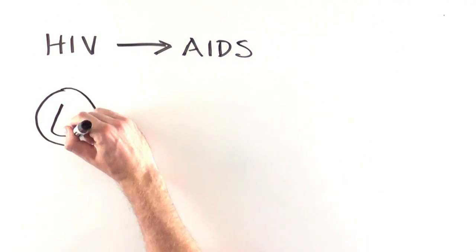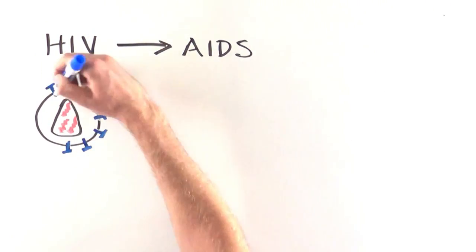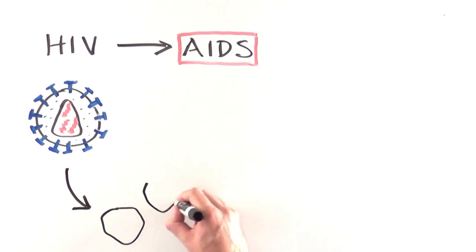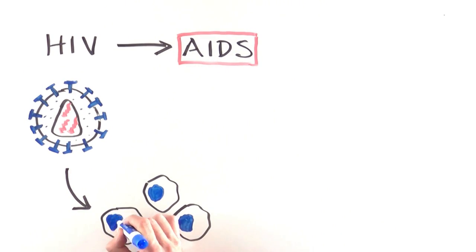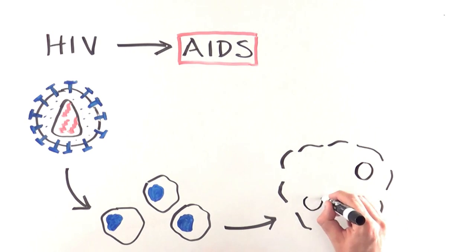HIV is the virus that causes AIDS. The HIV virus enters cells of our immune system, uses the cell's machinery to make more virus, and then kills the cell.